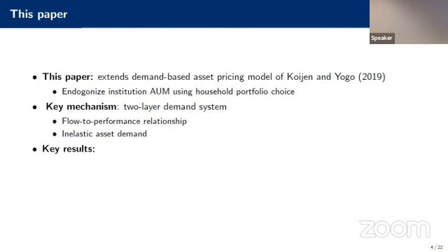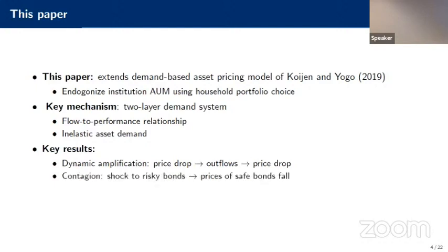A preview of our key results: we find in our model a dynamic amplification where asset price drops lead to outflows from certain funds, which amplifies price drops further. We also show evidence of contagion where, even if the shock initially starts in only one asset class, it can spread to other asset classes and across institutions.